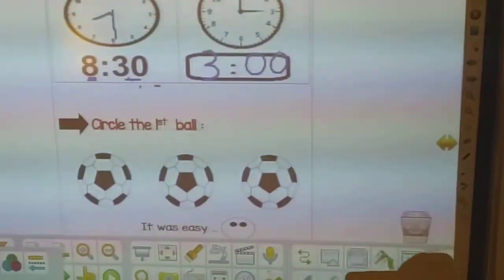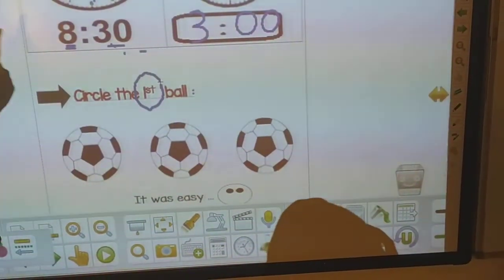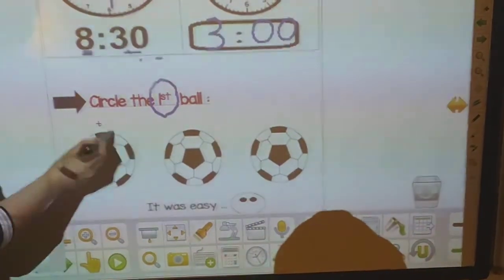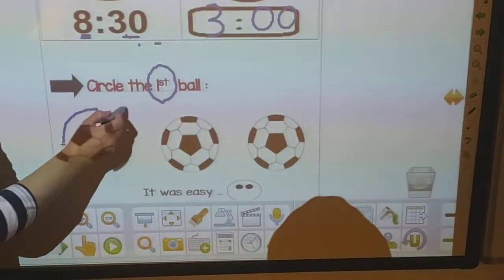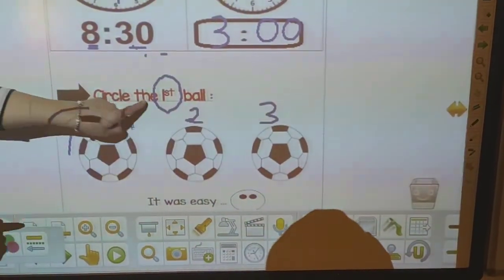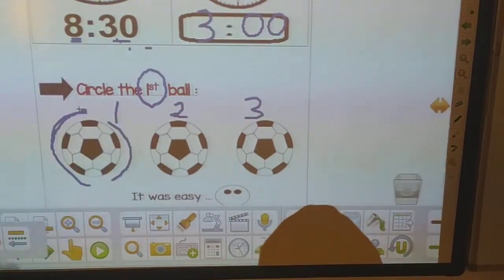The last question, circle the first ball. First ball means number one. I have here one, two, and three. So I want you to circle the first ball, which means this one.